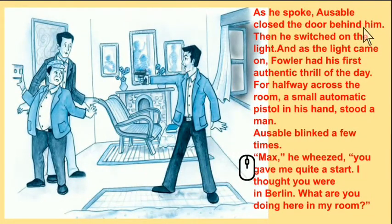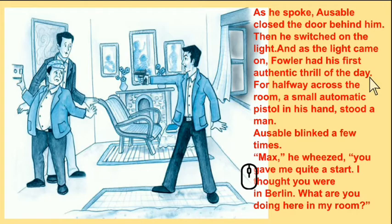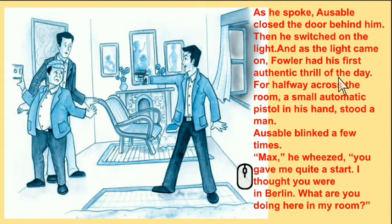As he spoke, Ozobal closed the door behind him and switched on the light. As the light came on, Fowler had his first authentic thrill of the day. Here, authentic means very genuine — the real thrill of the day. And what was that real thrill? For halfway across the room, a small automatic pistol in his hand, stood a man.